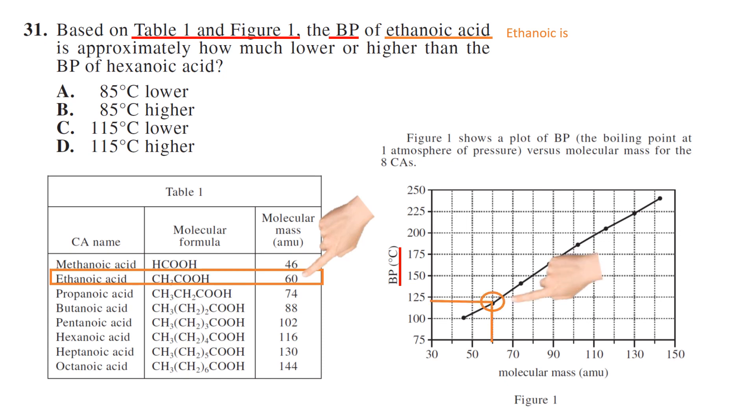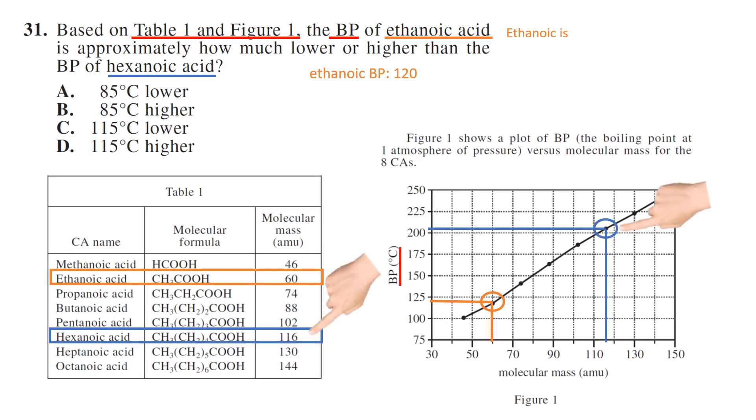And then hexanoic acid has a molecular mass of 116, a little over 200, 205 maybe. So 205 minus 120 is 85. Ethanoic acid is 85 lower than hexanoic acid. So your answer has to be A.